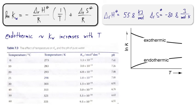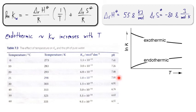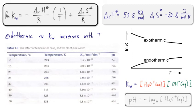This temperature dependence is also reflected in the pH of pure water, which is controlled by the self-ionization. At room temperature, neutral water has a pH of 7, but at higher temperatures the pH is actually lower because the equilibrium is shifted toward dissociation — meaning more protons are present at higher temperatures.